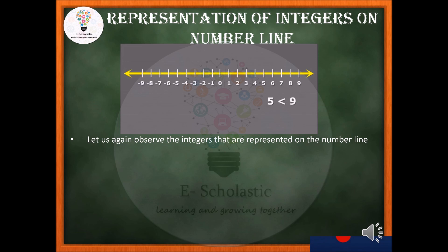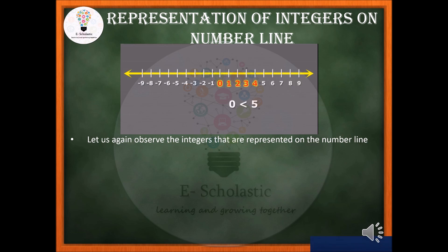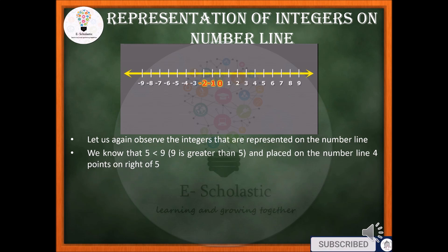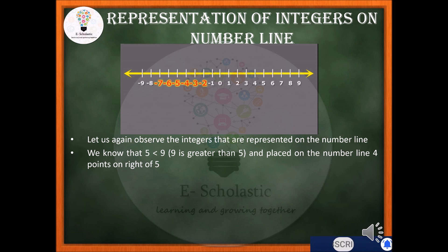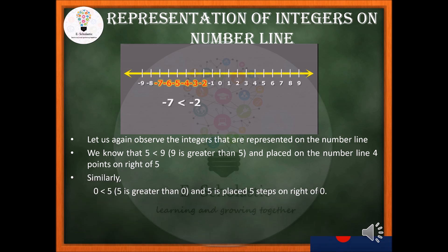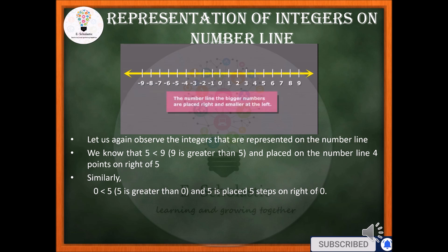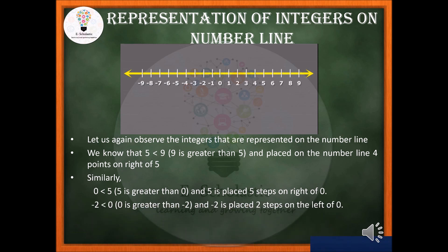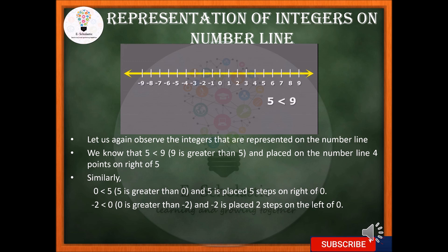Now let us understand how we order integers. Observing the integers on the number line, we know that 9 is greater than 5 and it is placed 4 steps to the right of 5. Similarly, 5 is greater than 0 and is placed 5 steps to the right of 0. Between minus 1, minus 2, and 0, we know that 0 is greater than minus 2.